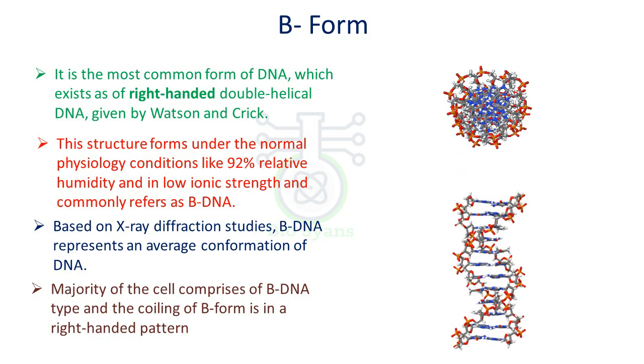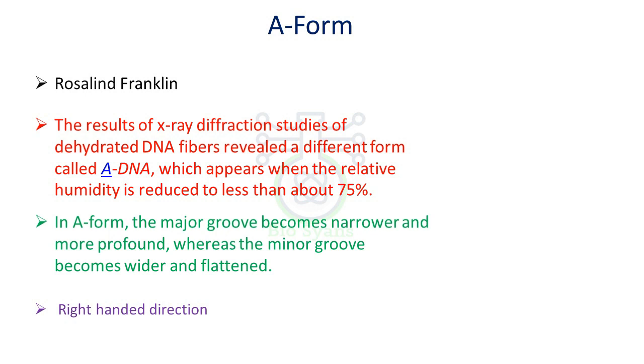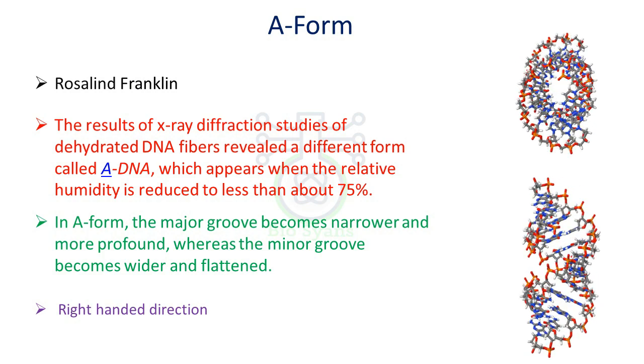Moving on to A-DNA, which is a right-handed direction rotation, it was given by Rosalind Franklin. The X-ray diffraction studies have shown that A-DNA is a dehydrated version of B-DNA with relatively reduced humidity to 75%. This A-DNA has got a major groove and a minor groove. The major groove is narrower and more profound, whereas the minor groove is wider and flattened.